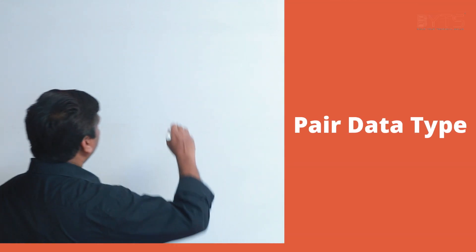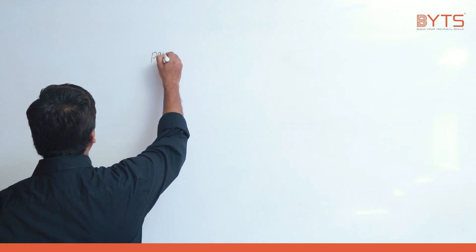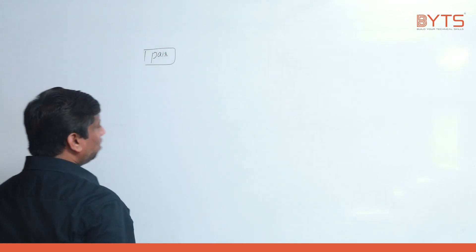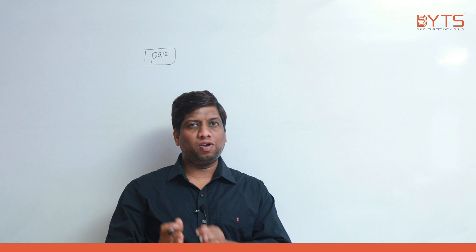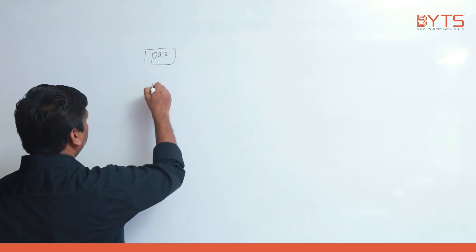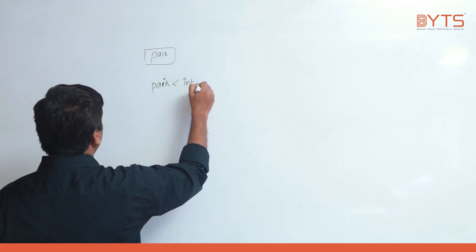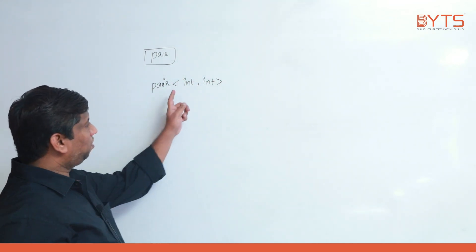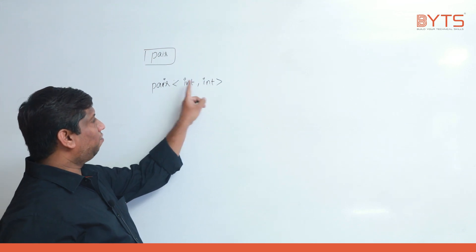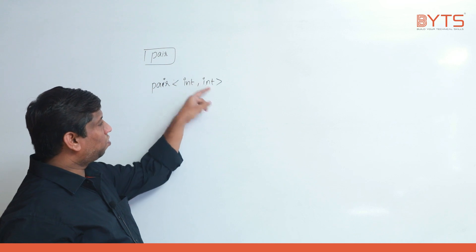Before we start with set, we will take one small concept called a pair. A pair is used to store values in the form of a key-value. The first value will be the key, and the next value will be the value. When I say pair<int, int>, both can be integers, one can be integer and another can be string, both can be anything.